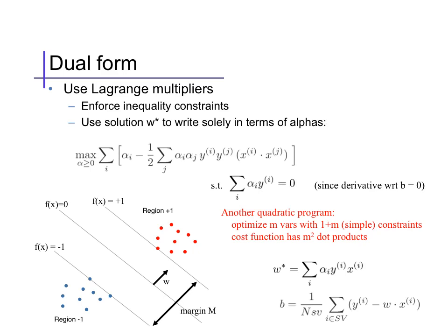This quadratic program is over m variables, one for each data point, the alpha_i, with m simple inequality constraints, alphas are positive, and one linear equality constraint. The Lagrangian dual is always a lower bound on the original primal problem, our minimization over theta. Quadratic programs like this have a property called strong duality, which says that the value of this maximization over alpha will be the same as the primal problem. And as we saw, there's a simple transformation from any solution alpha* to a solution w*, given by the equations in the previous slide.